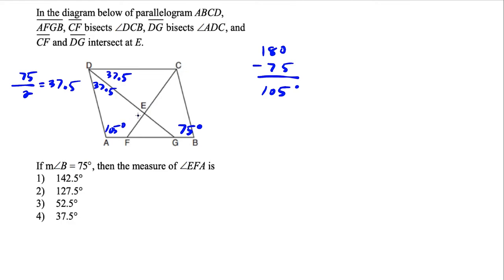And once again, this angle is being bisected. So we just do 105 divided by two, which is 52 and a half. So these two angles over here are 52 and a half degrees.